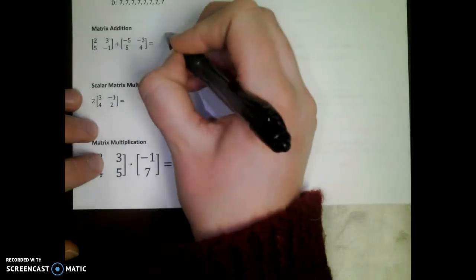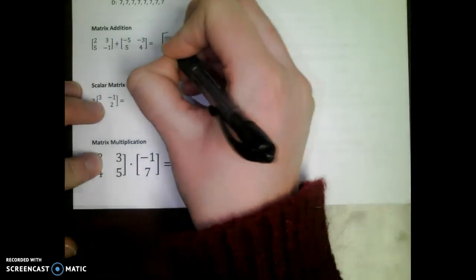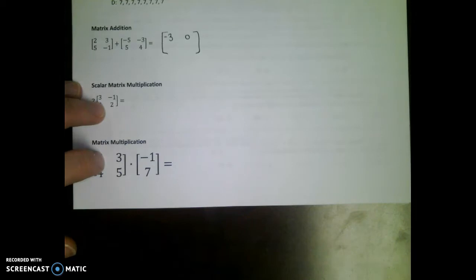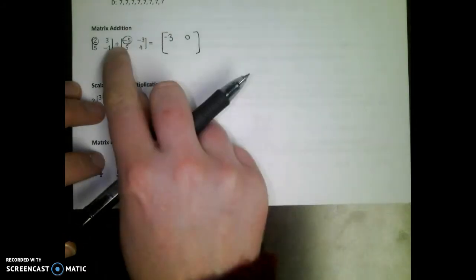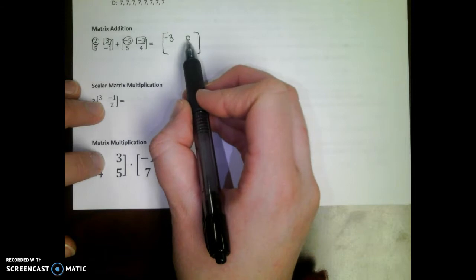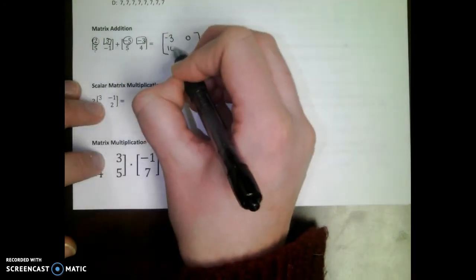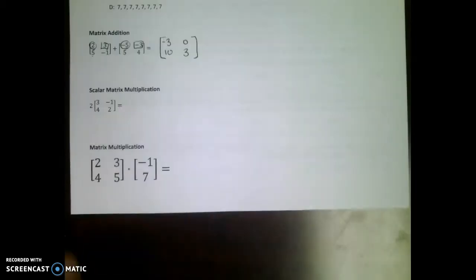So matrix addition is very, very simple. I'm going to do the first two and I'll bet you can figure out what I'm doing. How did I get negative three and zero? Two plus negative five is negative three. Three plus negative three is zero. So what's my second row going to look like? Five plus five is ten. And then the last one, negative one plus four is three. How's that for simple?